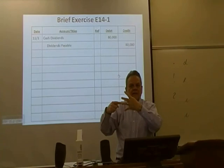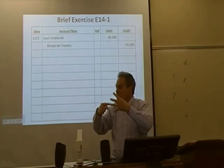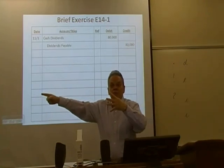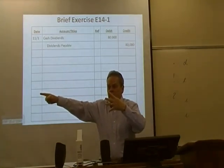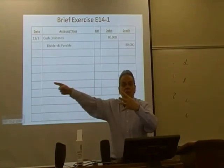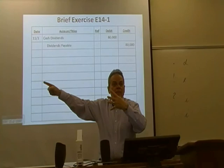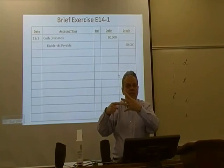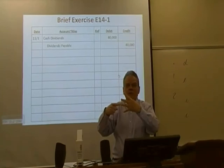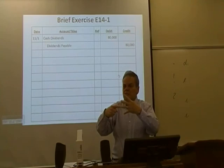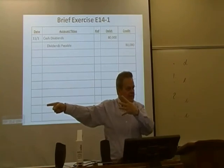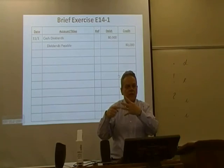Let's think about it for proprietorships, partnerships, and corporations. Step three — close income summary. For a proprietorship, to John Doe Capital. For a partnership, to John Doe Capital and Mary Smith Capital — one for every partner. For a corporation, to retained earnings. That's how retained earnings gets increased — step three of closing entries.